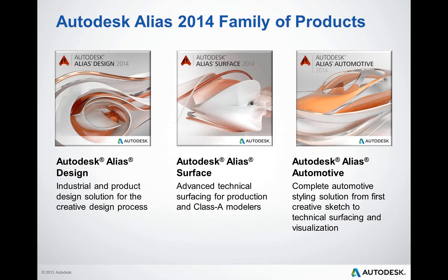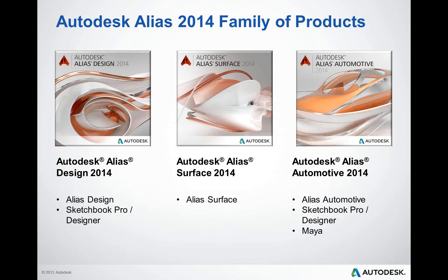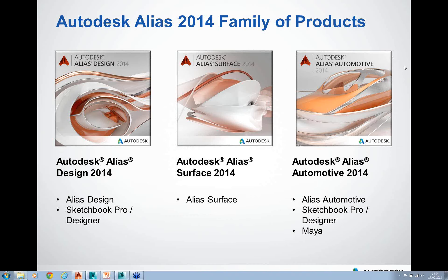We've got Alias Design, Alias Surface, and Alias Automotive. Alias Design is for the industrial and product design user doing the creative process. Alias Surface is about production modeling and Class A modeling. Alias Automotive is a complete automotive styling solution from sketch through to technical surfacing and Class A, including visualization. With Alias Design you also get Sketchbook Pro and Sketchbook Designer. Alias Automotive is the complete solution — it includes all tools and capability including Sketchbook Pro, Sketchbook Designer, Maya for concept modeling workflows, freeform organic workflows with polygonal data, and render preparation and generation.